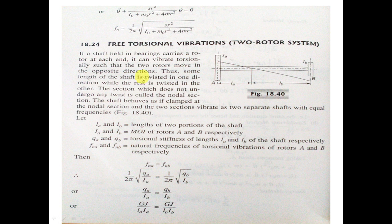For free torsional vibrations of a two rotor system, we have a shaft with two rotors A and B. The shaft held in bearings carries a rotor at each end. It can vibrate torsionally such that the two rotors move in opposite directions — A moves in one direction and B moves in the opposite direction, so some length of the shaft is twisted in one direction, say clockwise, while the other moves anti-clockwise.